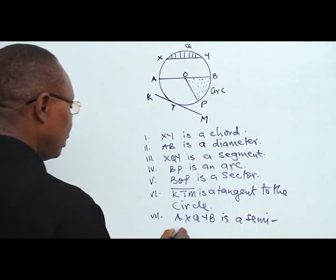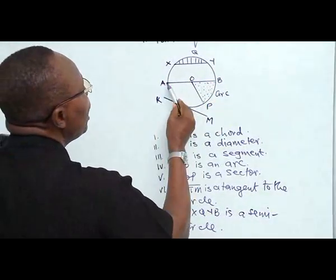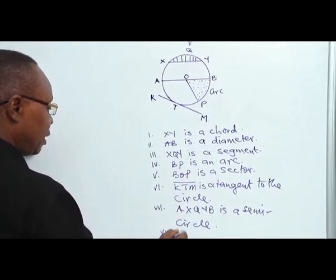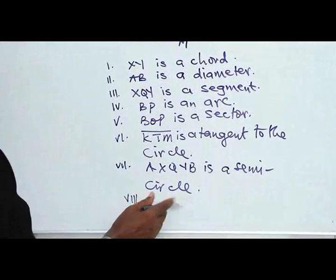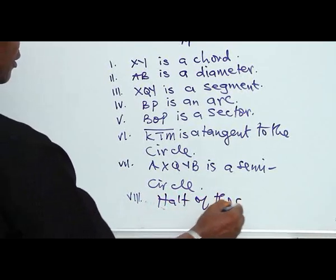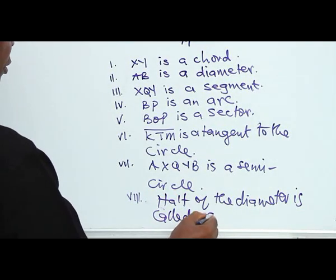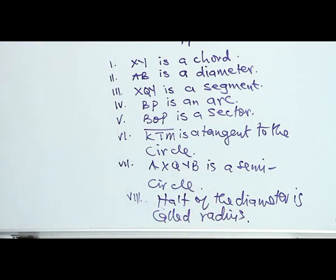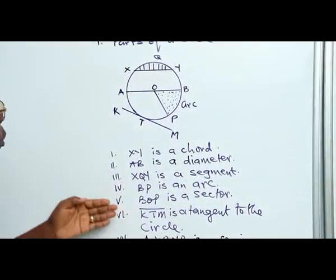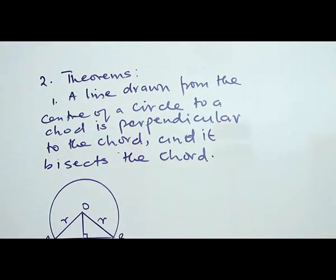A semi-circle is half of a circle. And of course we have already said that half of AB, which is the diameter, is called the radius. So these are the parts of a circle which we are going to be using to solve problems.